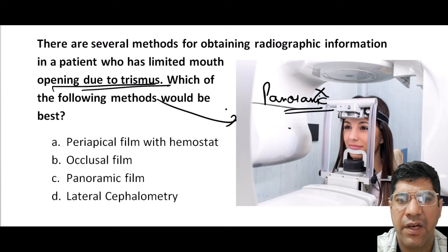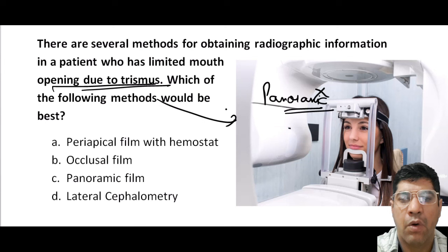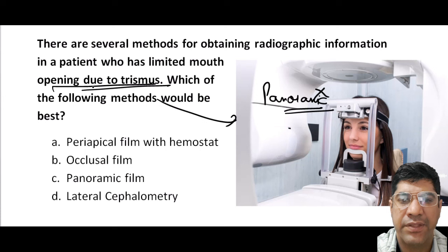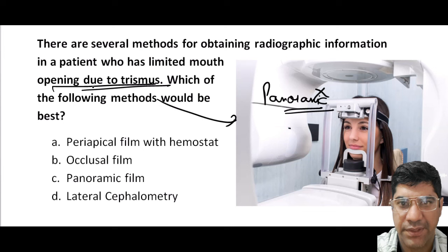Lateral cephalometry is primarily used for orthodontic and orthognathic surgery assessment and treatment planning. It shows a side profile of the patient's face including the jaw and soft tissue, allowing the orthodontist to assess the relationship and alignment of facial bones and teeth. So the best answer for the trismus question is the panoramic radiograph.